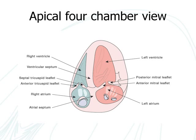Tissue Doppler imaging performed in either pulsed mode or with colour mapping allows the assessment of myocardial motion. Tissue Doppler imaging performed at the level of the tricuspid annulus in the apical forechamber view, which visualises the free right ventricular wall, is used to assess right ventricular function.